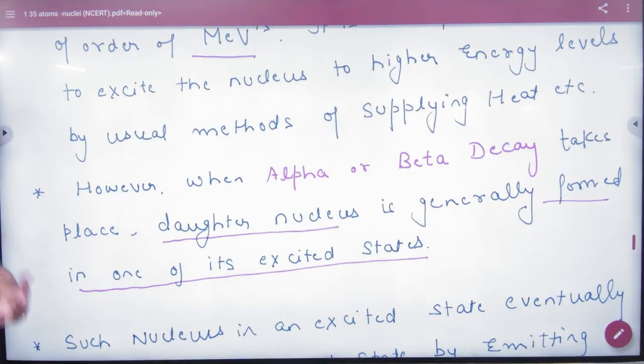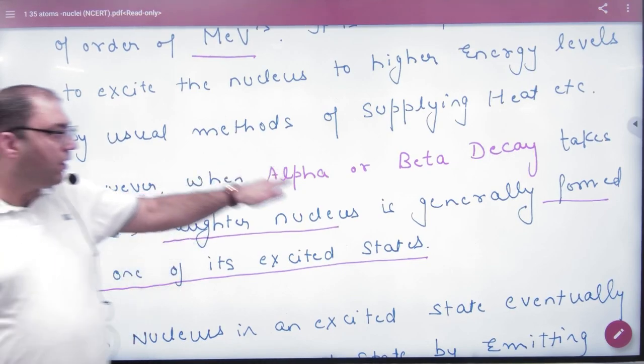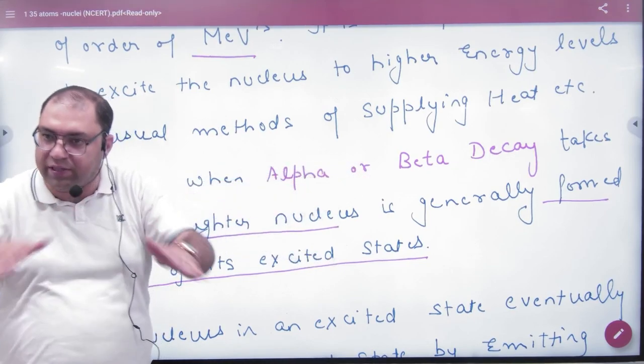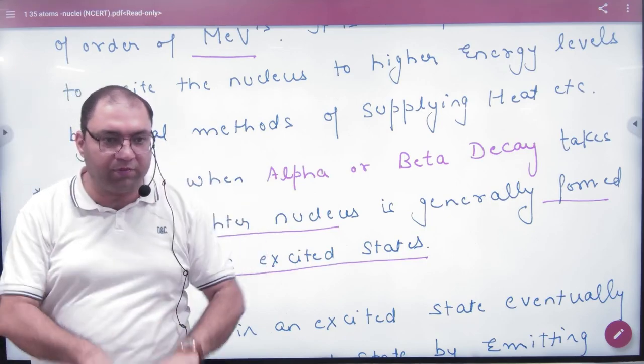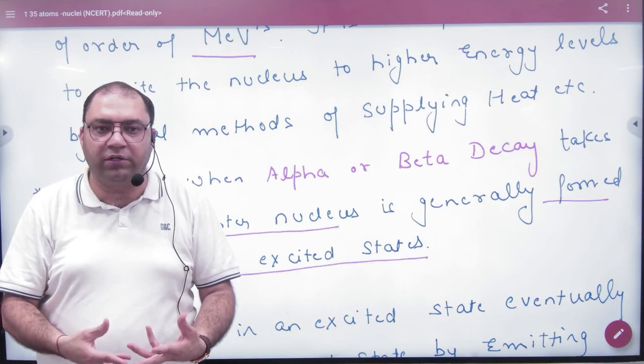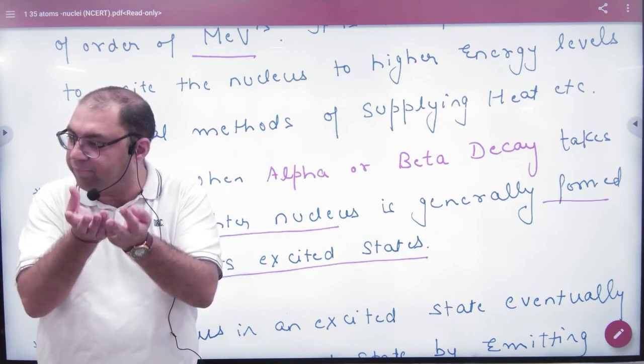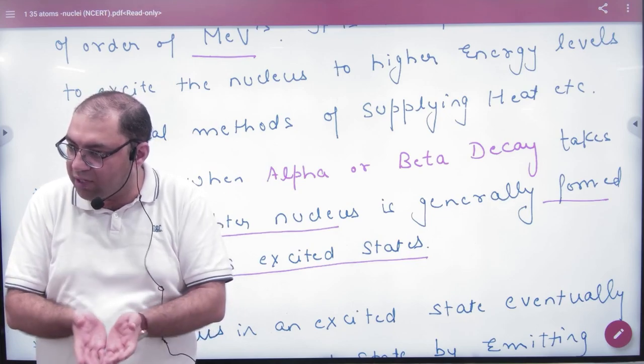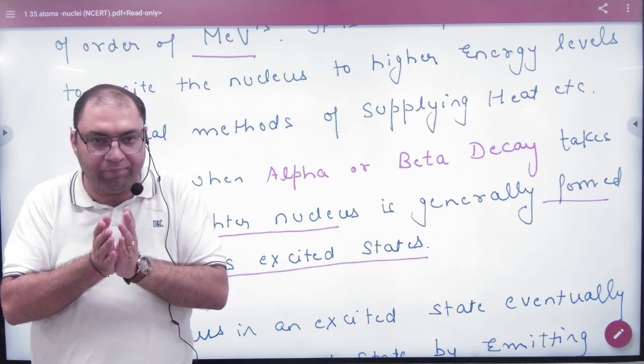When automatic radioactivity is occurring in which alpha or beta decay and the nucleus is converted, by default the daughter nucleus is automatically in a higher energy state. It is not stable. The resultant state of nucleus is in higher energy state.